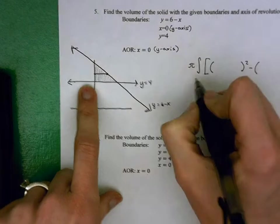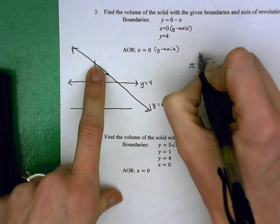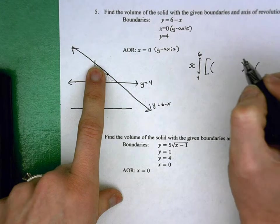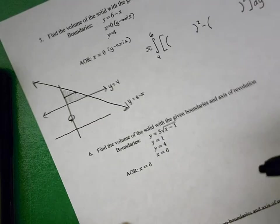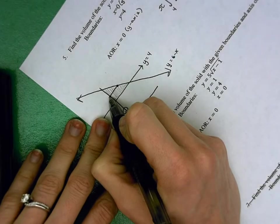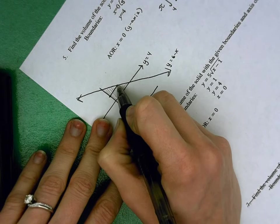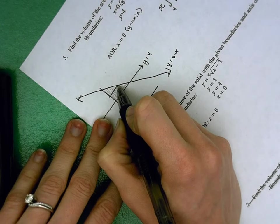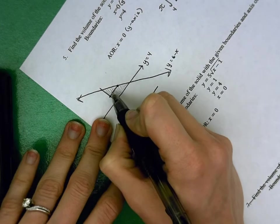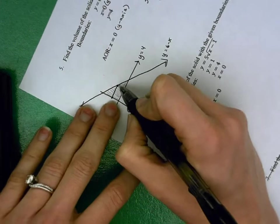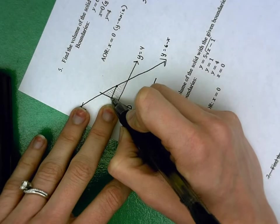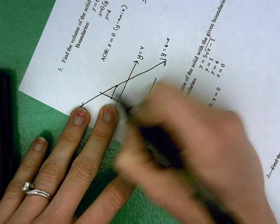So my bounds, my lower y here is 4. My upper y is 6. My big R is this distance, the distance from the axis of revolution to the furthest point of the shaded region. From the axis of revolution to the furthest point, we have upper minus lower, above minus below.